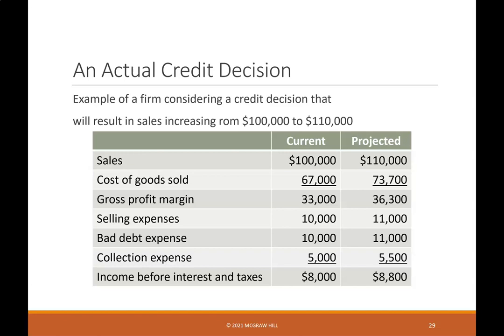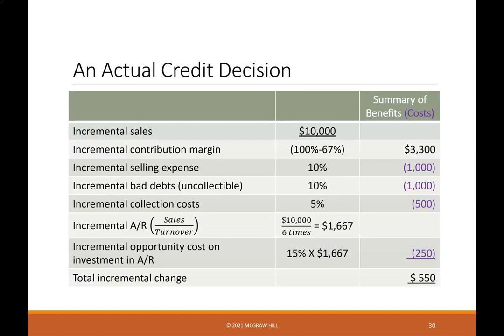An actual credit decision example involves a firm considering a credit decision that will result in sales increasing from $100,000 to $110,000. The analysis covers current and projected sales minus cost of goods sold equals gross profit margin, minus selling expenses, minus bad debt expense, minus collection expense, equaling income before interest and taxes. The summary of benefits and costs includes incremental sales, incremental contribution margin, incremental selling expense, incremental bad debts, incremental collection costs, incremental accounts receivable, incremental opportunity cost on investment in accounts receivable, and total incremental change.